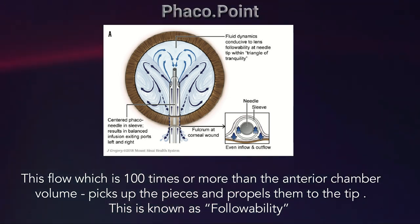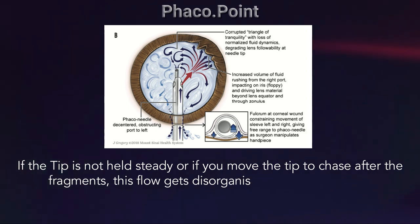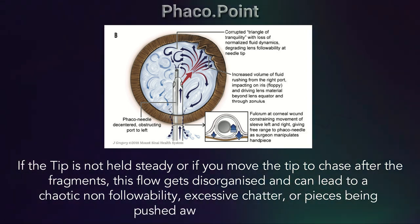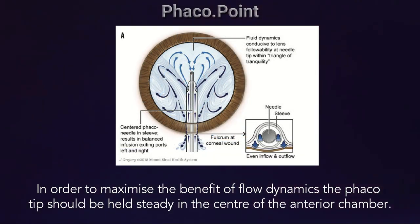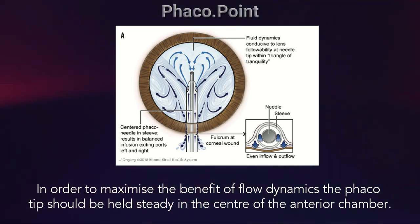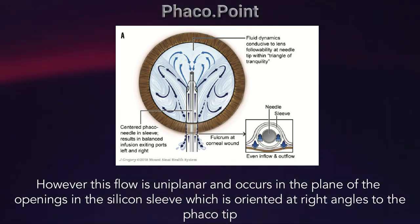This is known as followability. If the tip is not held steady, or if you move the tip to chase after the fragments, this flow gets disorganized and can lead to chaotic non-followability, excessive chatter, or pieces being pushed away from the phaco tip. In order to maximize the benefit of flow dynamics, the phaco tip should be held steady in the center of the anterior chamber. However, this flow is uniplanar and occurs only in the plane of the opening of the silicone sleeve, which is oriented at right angles to the phaco tip.